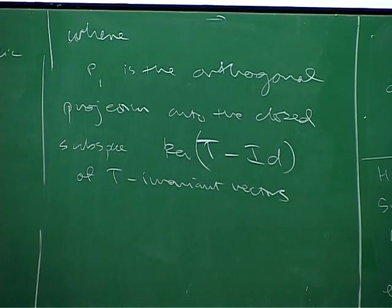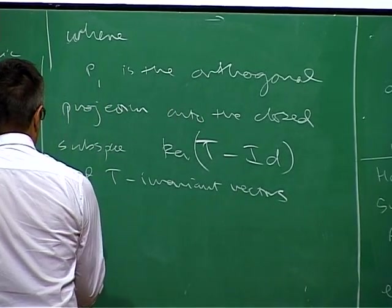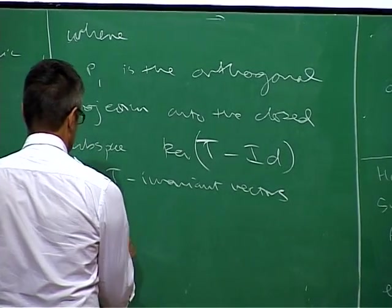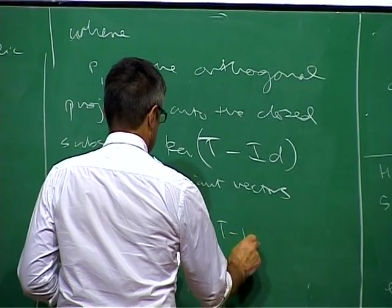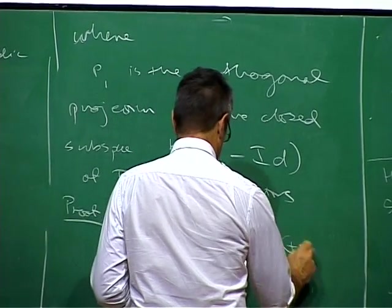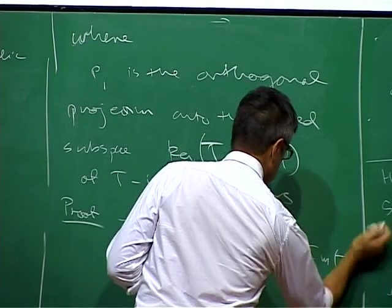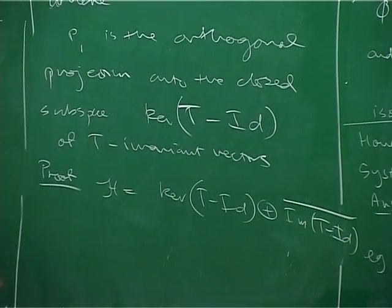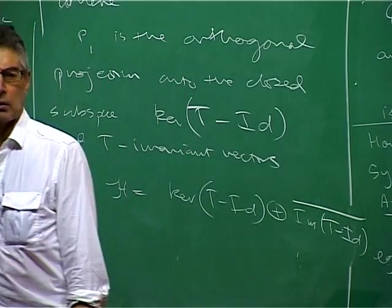T-invariant, and it's the projection onto the T-invariant vectors. You can write H as the sum of the kernel of T minus the identity, which is closed, and the image, the closure of the image.